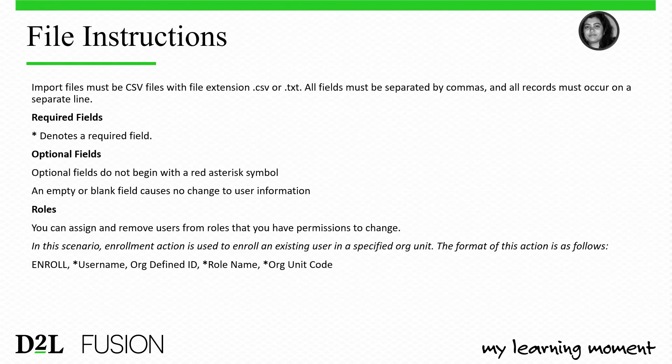The CSV file follows a specific D2L format: all fields must be separated by commas and all records must be on separate lines. Since we are enrolling users, the action item is 'Enroll.' Required fields are username, role name, and org unit code, all starting with 'Start.' The org-defined ID field is optional. This action enrolls an existing user in a specified org unit.